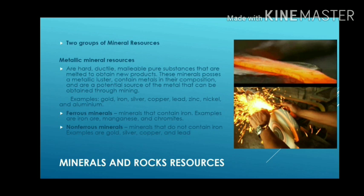Metallic mineral resources are divided into two groups. First are ferrous minerals — minerals that contain iron — for example iron ore, manganese, and chromites. Second are non-ferrous minerals — minerals that do not contain iron — examples are gold, silver, copper, and lead. In general, they occur as mineral deposits and are good conductors of heat and electricity.